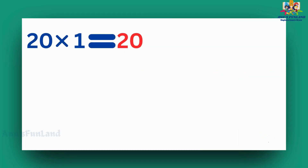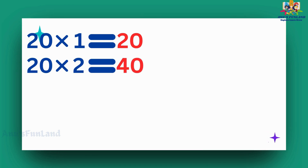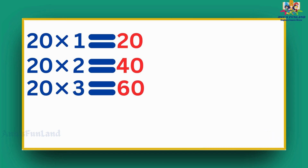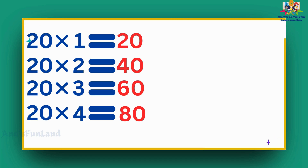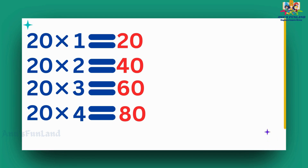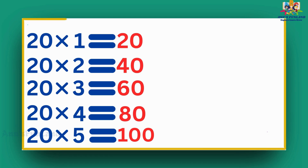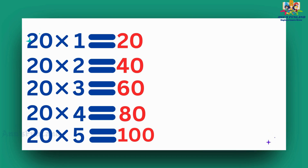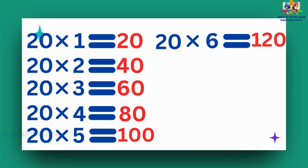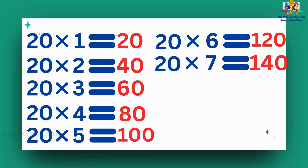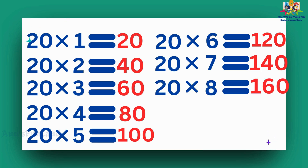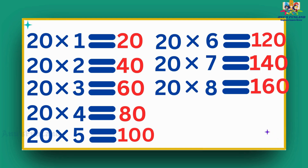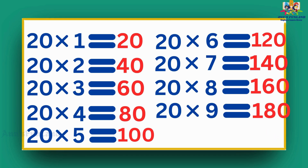20 1s are 20. 20 2s are 40. 20 3s are 60. 20 4s are 80. 20 5s are 100. 20 6s are 120. 20 7s are 140. 20 8s are 160. 20 9s are 180.